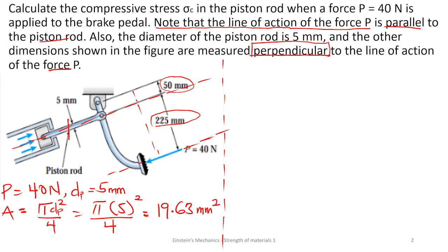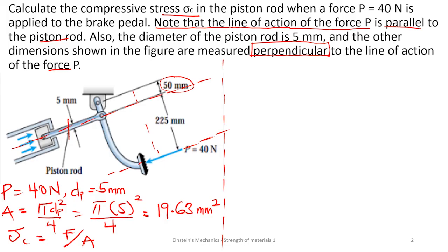Now we have to calculate the compressive stress. We know that stress is force over area. We are interested in the compressive stress inside the piston rod. We know the area of the piston rod, so we have to find the force inside the piston rod. Let me draw the free body diagram of the entire system so that we can make the analysis.